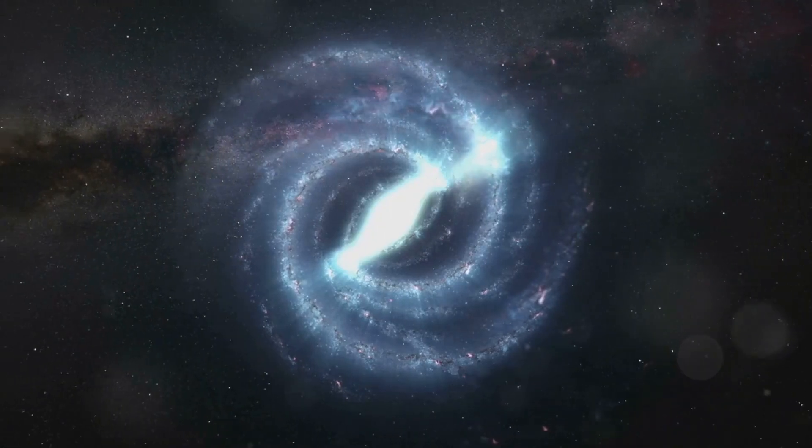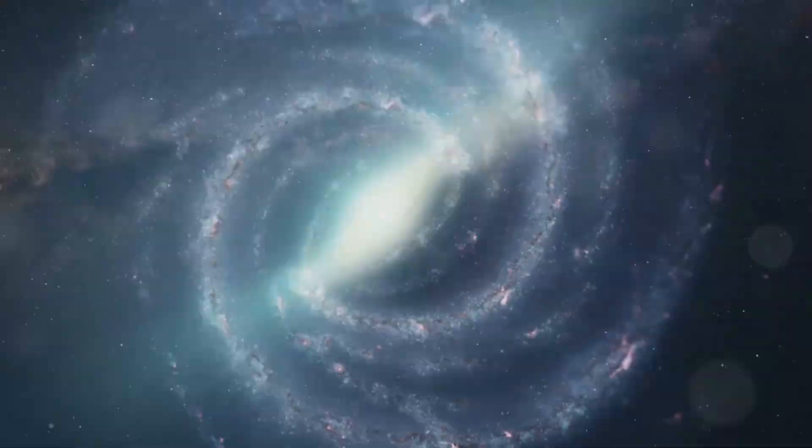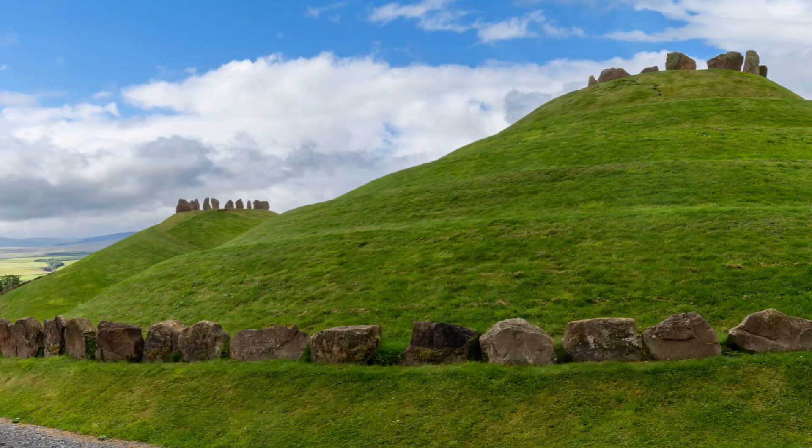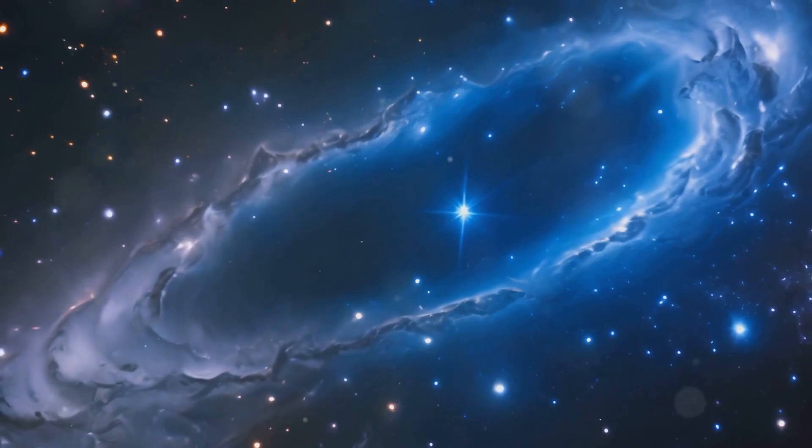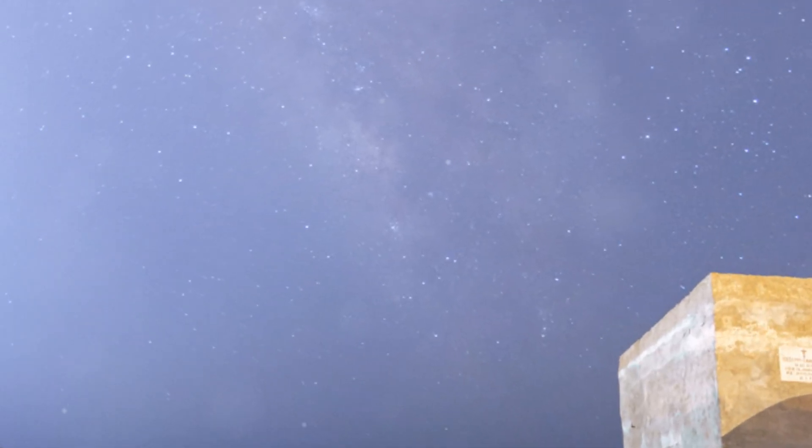These early galaxies were smaller and more irregular than the majestic spiral and elliptical galaxies we see today. One of these early galaxies, a swirling cloud of gas and dust, would eventually evolve into our own Milky Way galaxy.